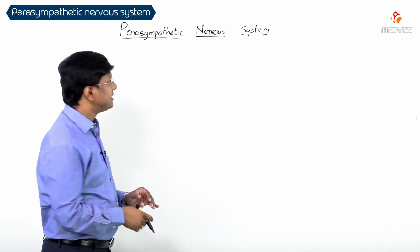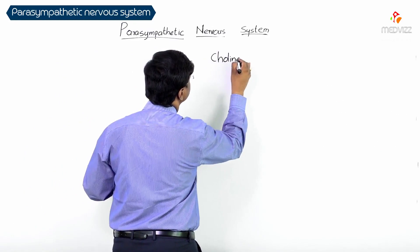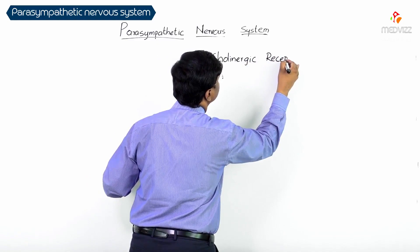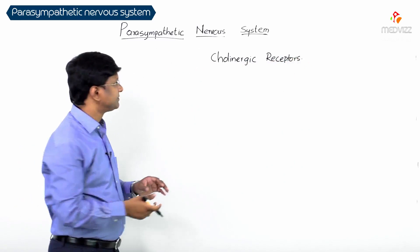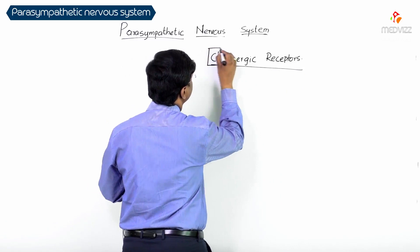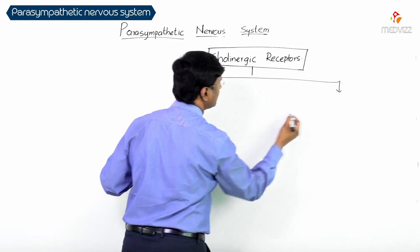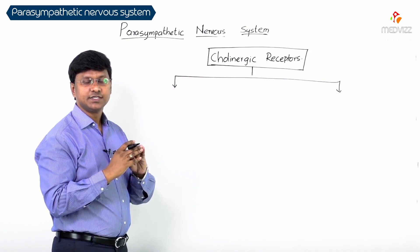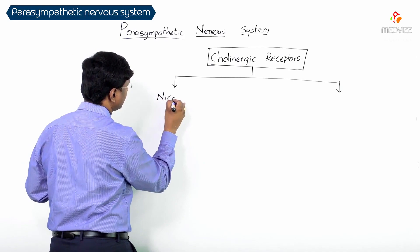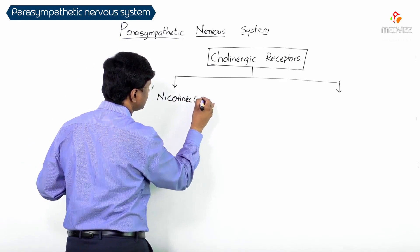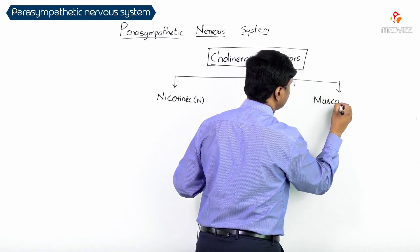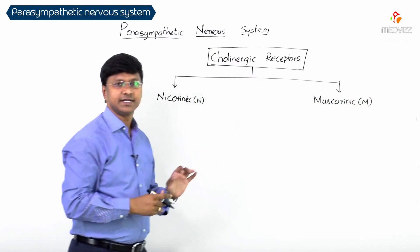The parasympathetic nervous system acts through cholinergic receptors. These cholinergic receptors are of two types: nicotinic receptors and muscarinic receptors.